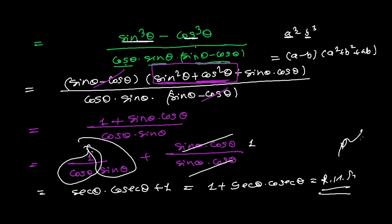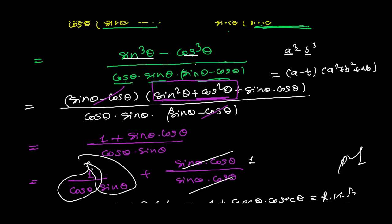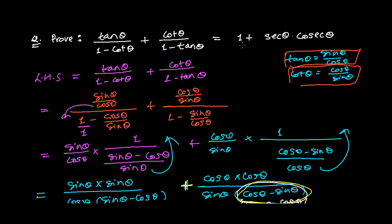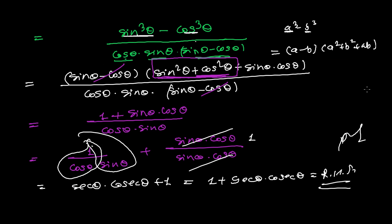And hence we proved it. Our proven result is 1 plus sec theta cosec theta. I hope you understand, my brother Jahid PZA. If there is any confusion, please feel free to comment below this video. See you in the next video, goodbye!